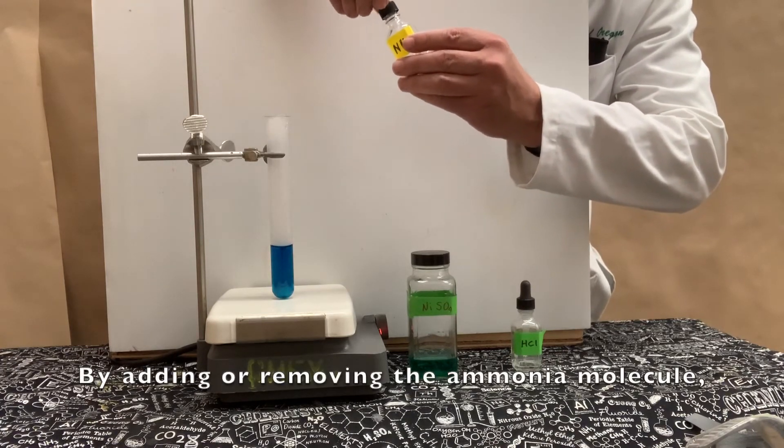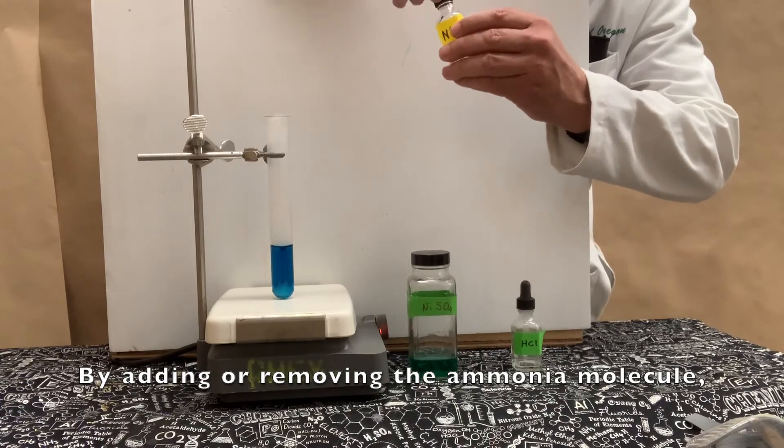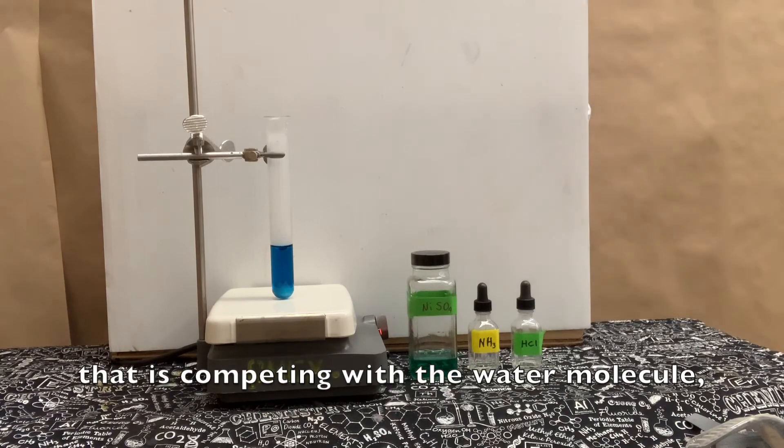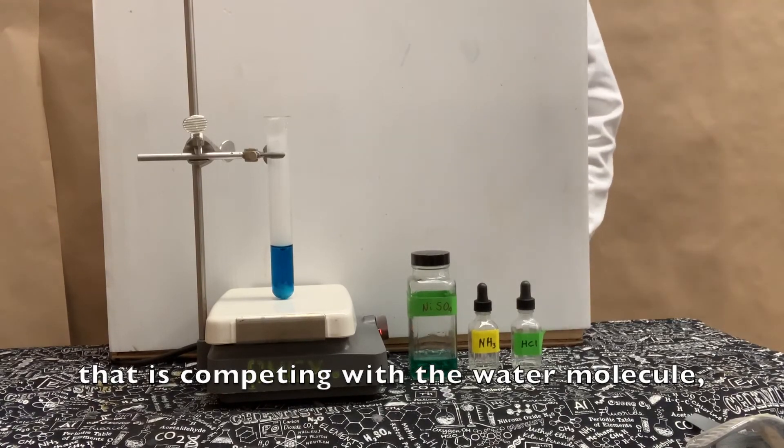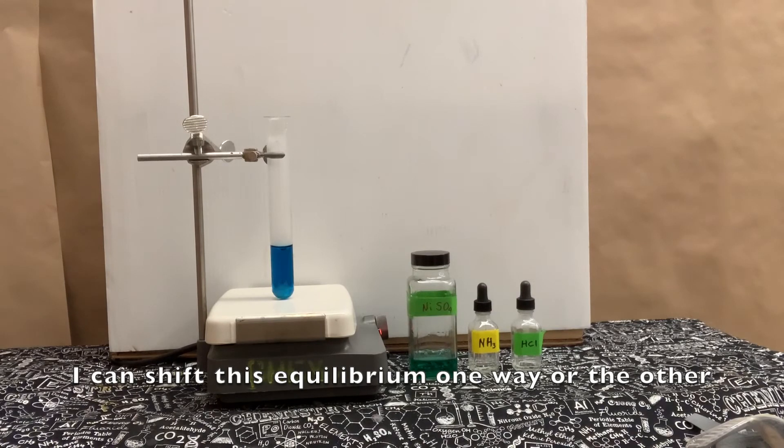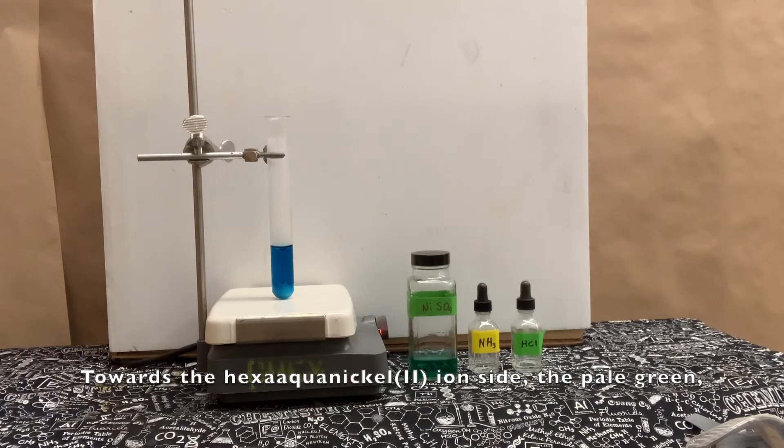By adding or removing the ammonia molecule that's competing with the water molecule, I can shift this equilibrium one way or the other towards the hexa-aqua nickel(II) ion side, the pale green, or the hexamine nickel(II) ion side,